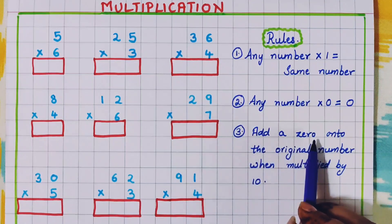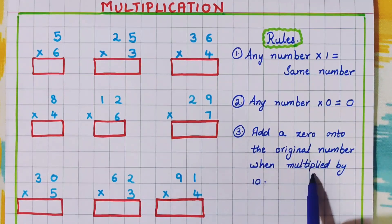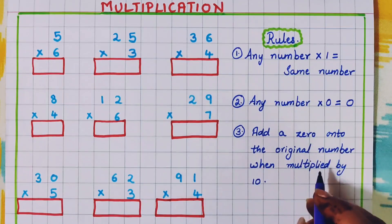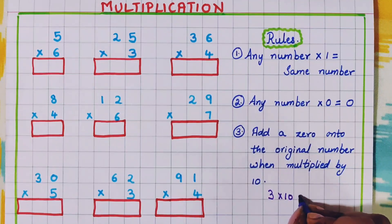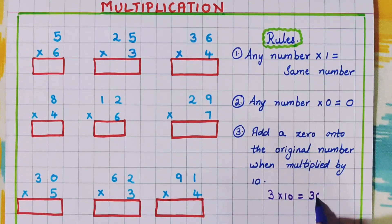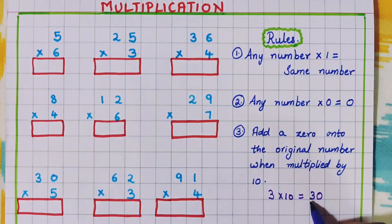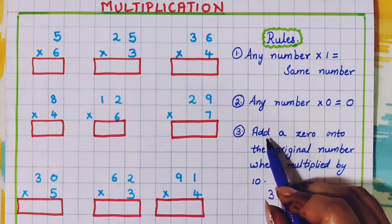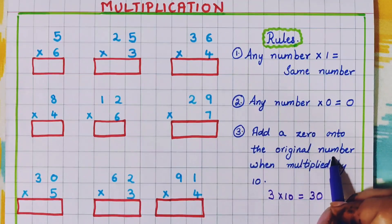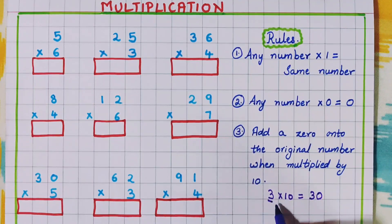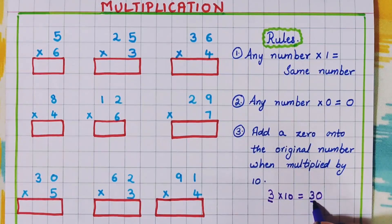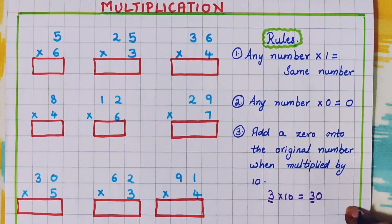Next, add a 0 onto the original number when multiplied by 10. Now let's take an example. If I am multiplying 3 into 10, just to the original number I am going to add a 0 at the end, so 30 will be the answer. Here the original number is 3; 3 into 10, I will write 3 and add a 0. So these are the 3 basic rules for multiplication.